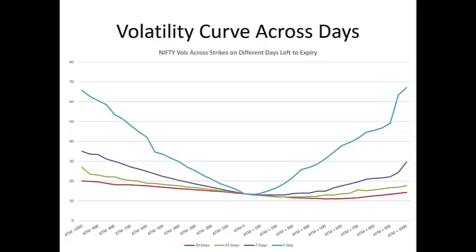Why is ATM the foundation? Let's look at the vol curve. The x-axis represents strikes and the y-axis represents volatility. This slide shows four different vol curves taken on four different days. The red line is the vol curve with one month left to expiry — the flattest curve. The green one is 15 days left to expiry, the purple is 7 days, and the light blue steepest curve is 1 day to expiry. As the number of days to expiry decreases, the vol curve gets steeper. Strikes are represented as ATM-100, ATM-200 etc., because ATM shifts with changes in the index value.